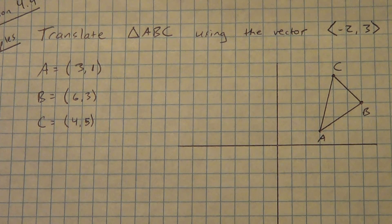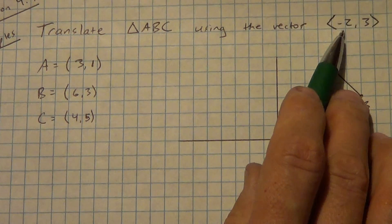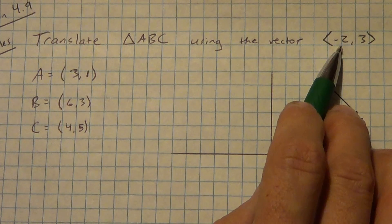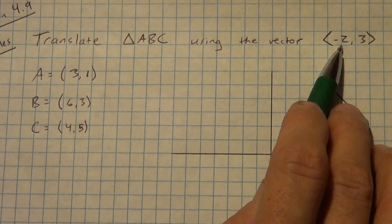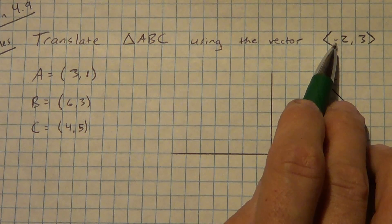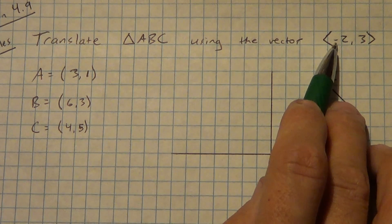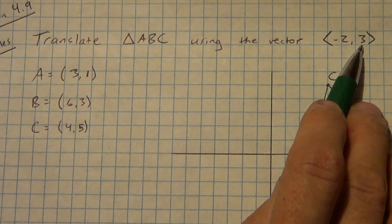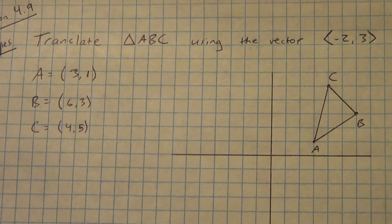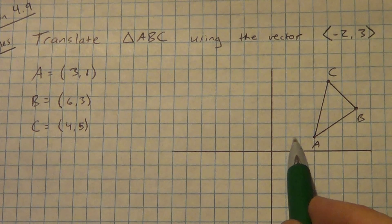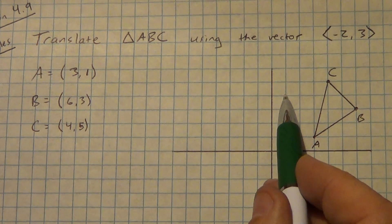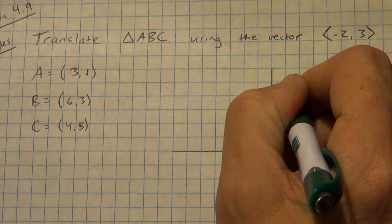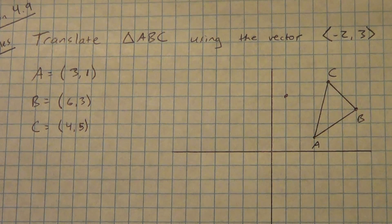Alright, you should have that done by now. So what we're going to do is move by the vector negative 2, 3. Remember, X and Y — X comes first, Y comes second. So the negative 2 is a left-right movement, and because it's negative, we're moving left. The positive 3 is an up-down movement, so we're moving up. We're going to take this point, go left 2 and up 3, and put a dot right there — that's my new point.